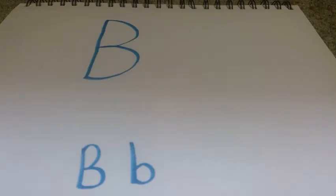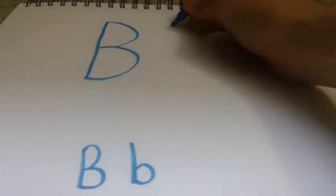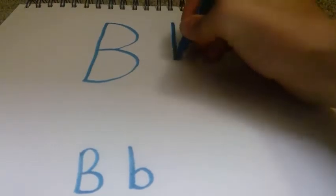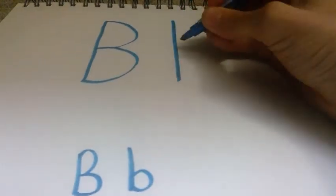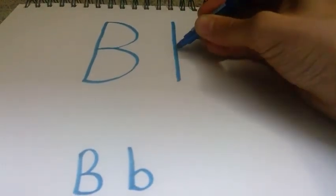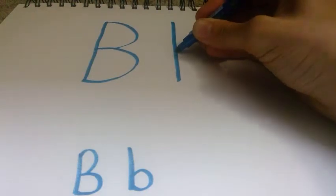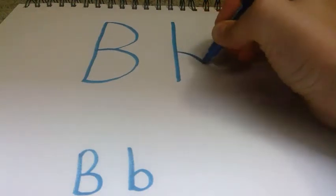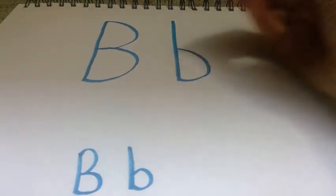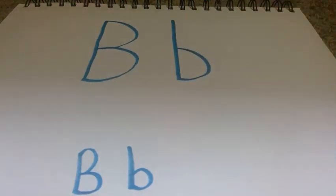Next, we're going to draw a lowercase letter B. We're going to start at the top, draw a long line down, come about to the middle of your long line and draw a small curve to the bottom of your line and you made your lowercase B.